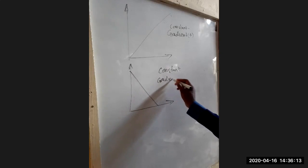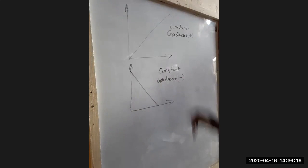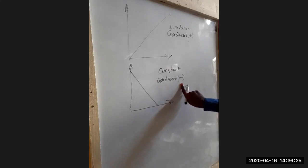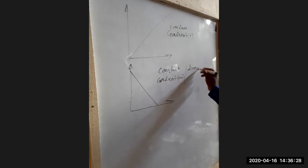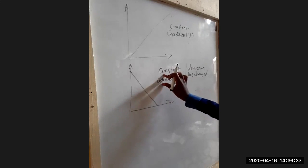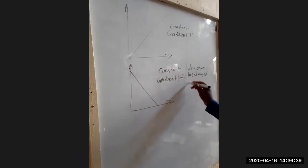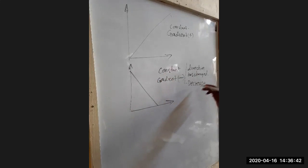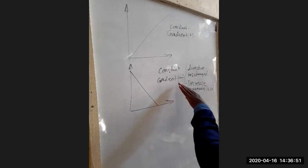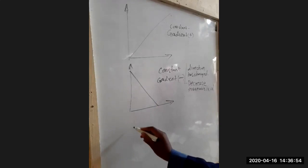A graph moving in this direction has a constant gradient but now it is negative. In physics a negative gradient will mean two things: either the direction of motion has changed, or the variable here — which could be velocity or acceleration — is decreasing. So negative means two things: a decrease in the variable, which could be either velocity is decreasing or acceleration is decreasing.